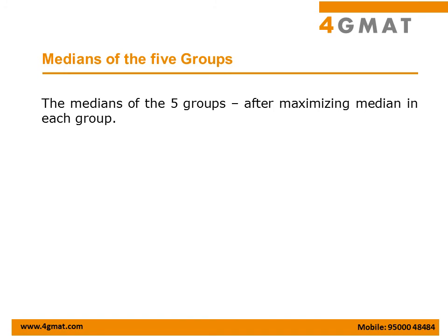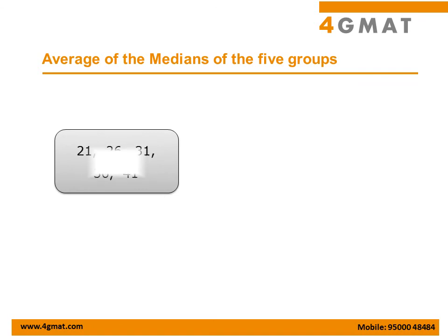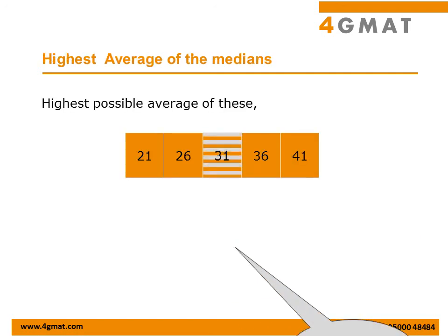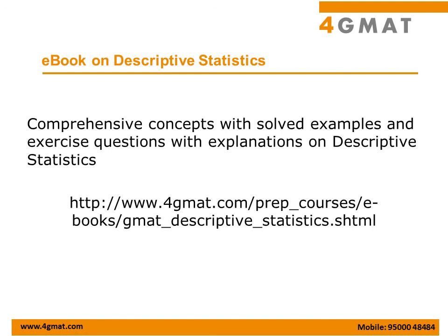Now let's put all of these together. We have maximized the median in each group and the 5 medians are 21, 26, 31, 36, and 41. The last step is to find the average of these 5 medians. The average of these 5 numbers gives us the highest possible average of the medians. The highest possible average is 31. You can download an e-book on descriptive statistics to understand the concepts behind average, median, mode, and deviation.